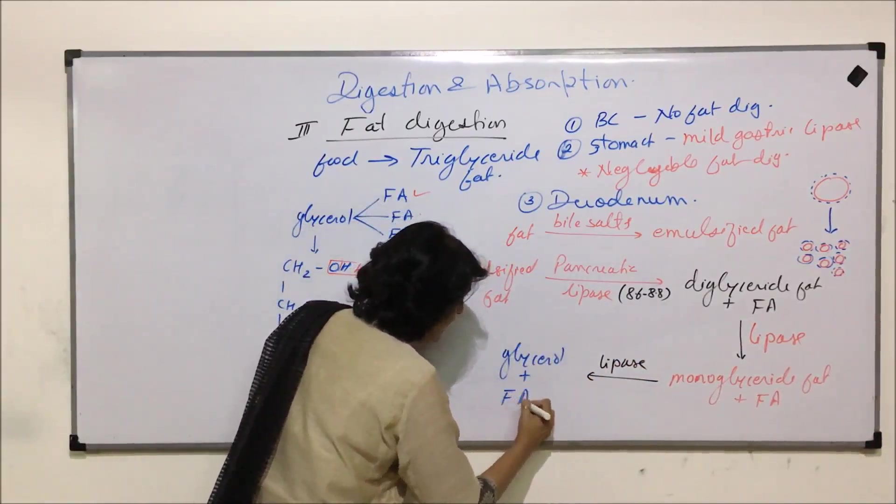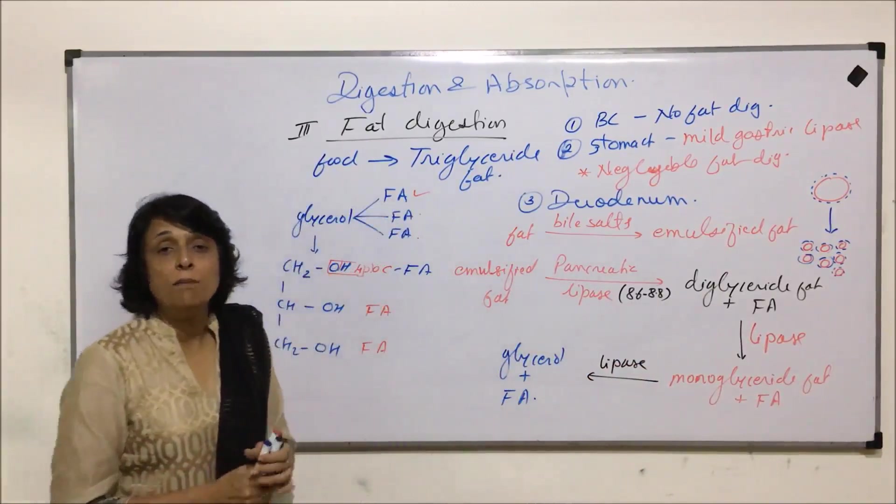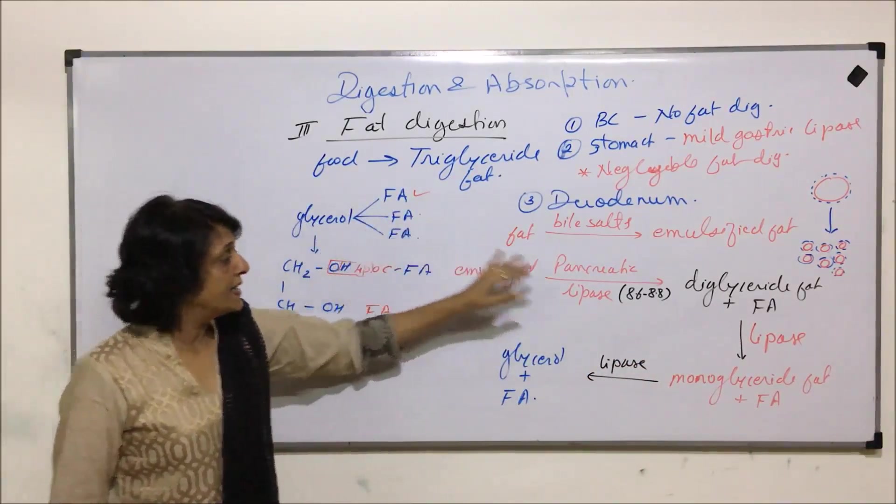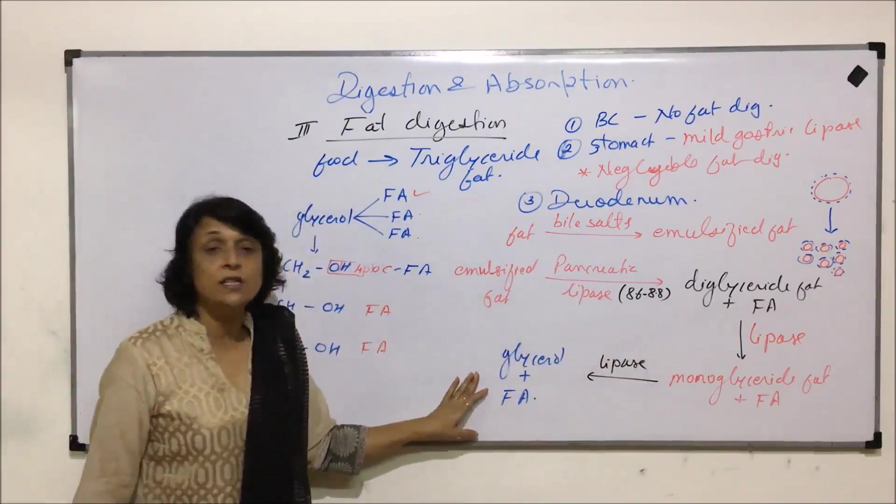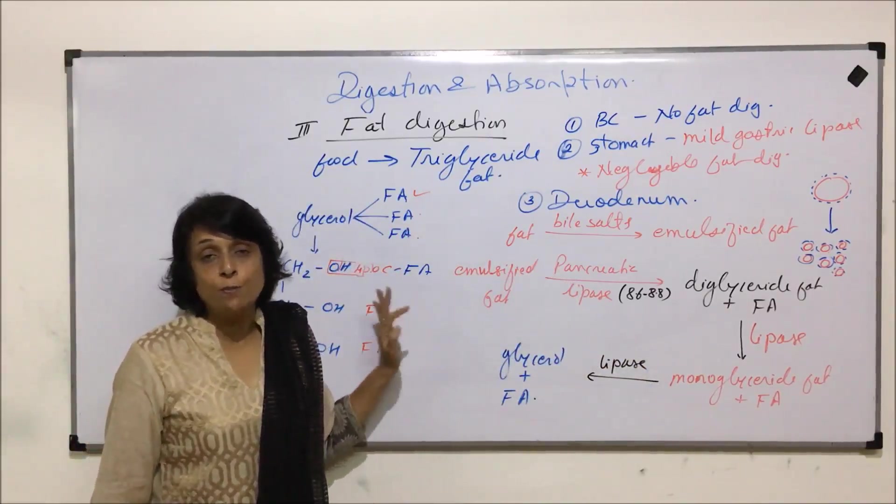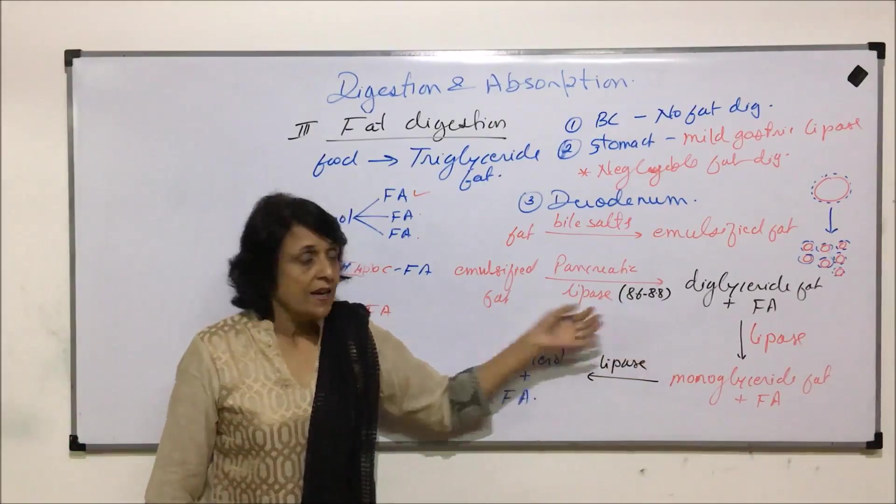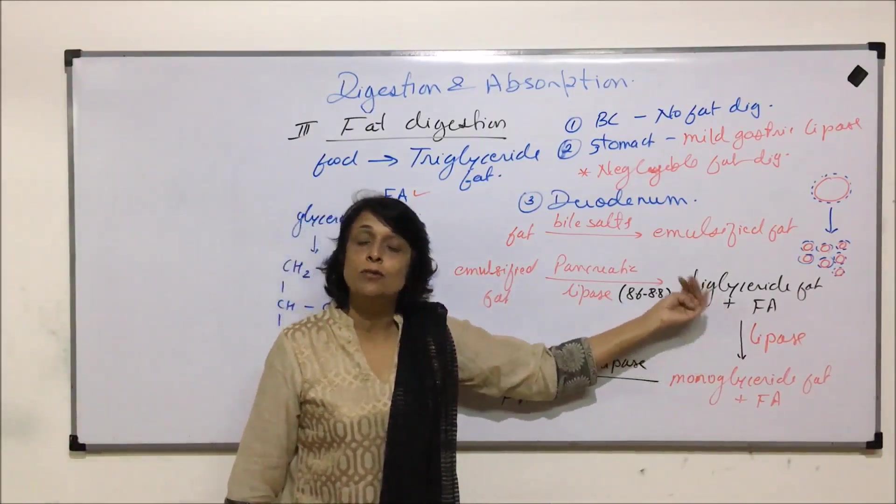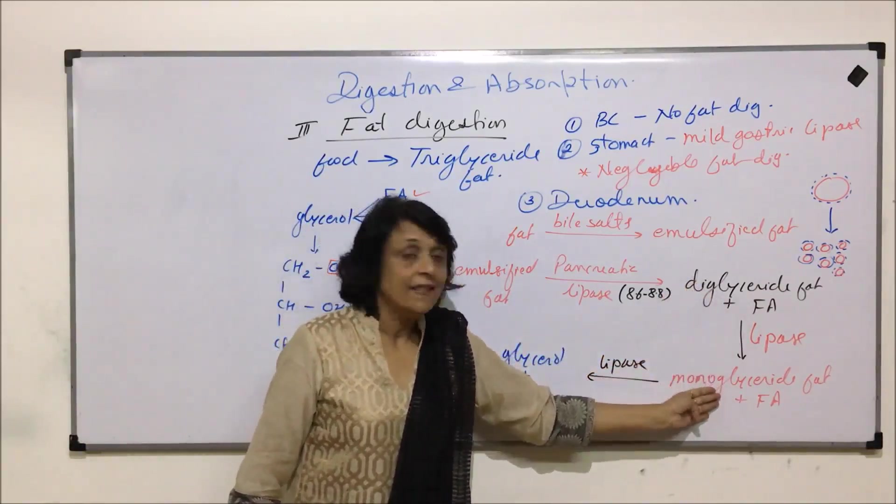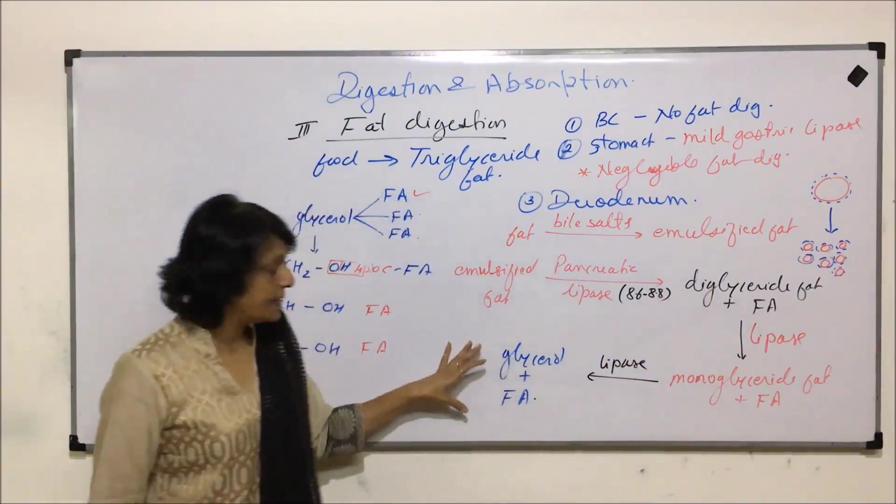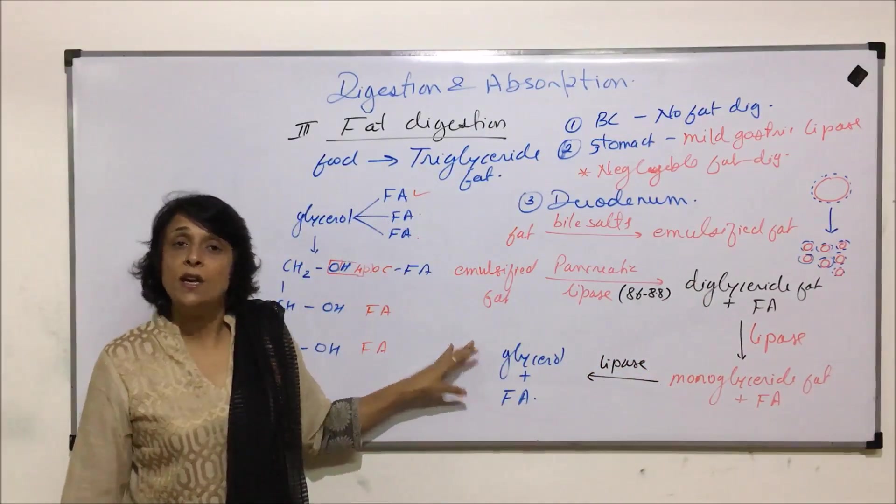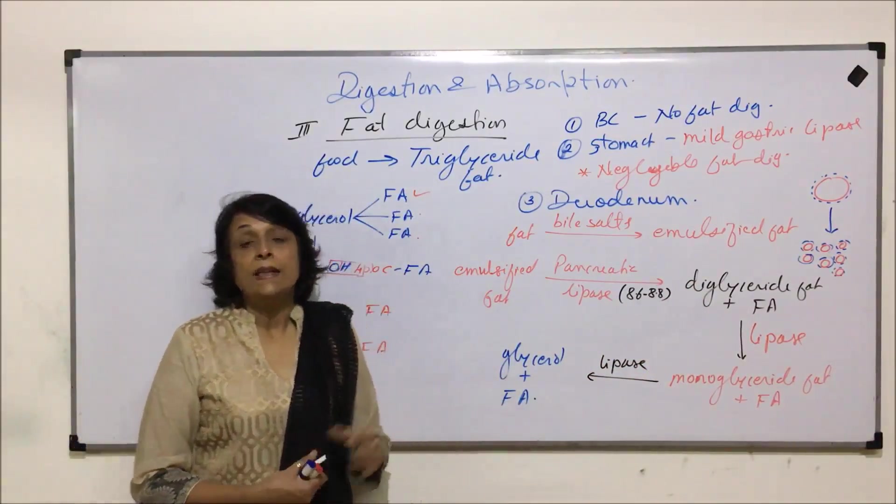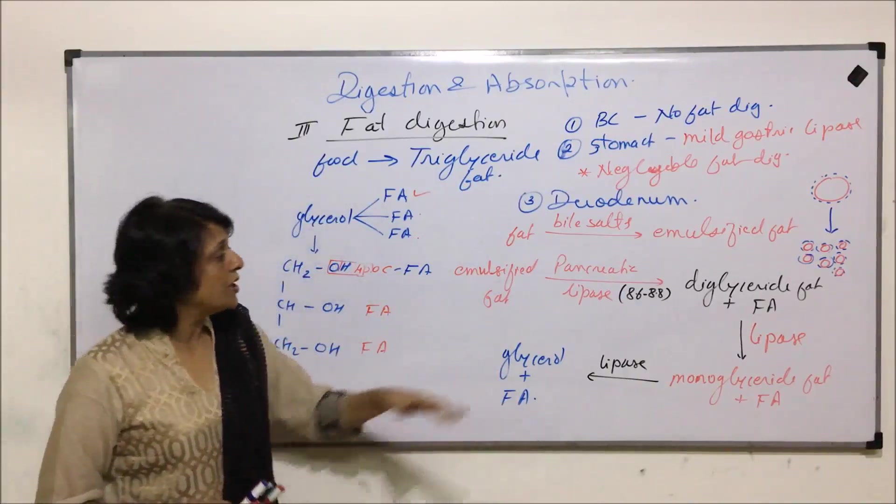That means the complete fat molecule, the triglyceride fat, is broken down into its components, but this reaction takes place in stages. Triglyceride emulsified fat first gets broken down into diglyceride and fatty acid, then monoglyceride and fatty acid, and then finally we get all the end products - glycerol and fatty acid. A similar kind of action is done by intestinal lipase.